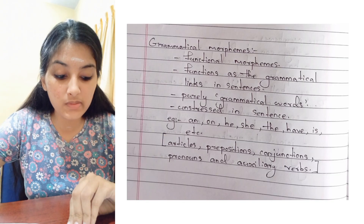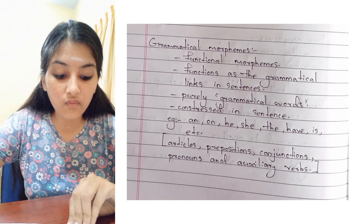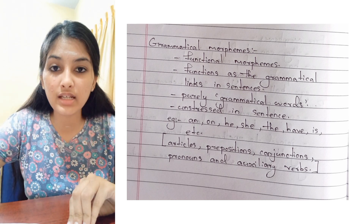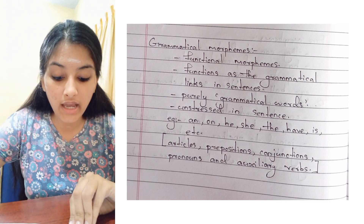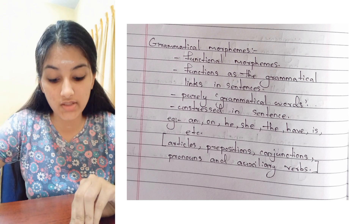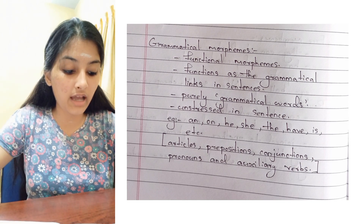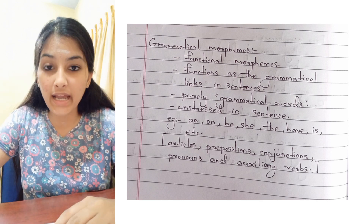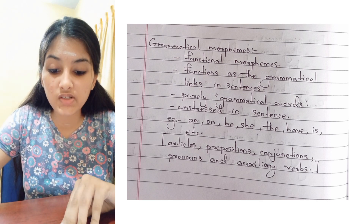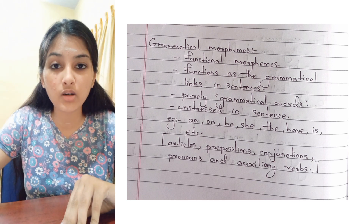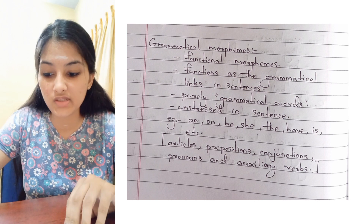Grammatical morphemes are also known as functional morphemes. These are the morphemes which function as grammatical links in a sentence. They are purely grammatical words and are usually unstressed. For example: an, own, he, she, the, have, is, etc. That means articles, prepositions, conjunctions, pronouns, etc. are all grammatical morphemes or functional morphemes.